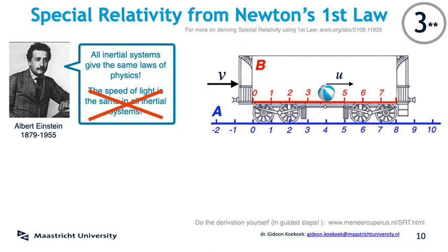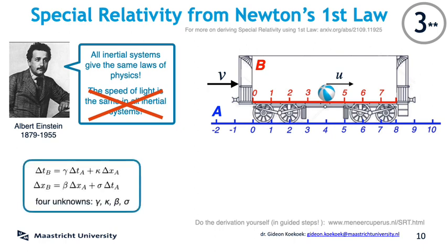It only takes a little thought to realize that these formulas must necessarily be linear relationships. Delta x and delta t in B can at most depend on delta x and delta t in A to the first power with some constants in front, because if the powers were higher than the first, their resulting derivatives would give velocities that are non-constant. But if the ball has no net forces acting on it in either of the two systems, it has to go with a constant velocity U in both systems, because they are inertial systems — the acceleration should be zero. So from the premise that A and B are inertial systems, we already know that the formula should be linear.